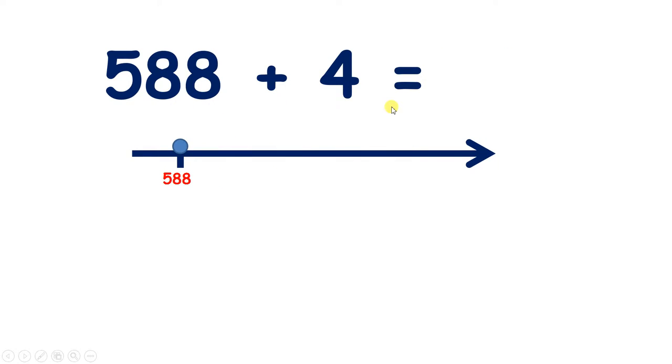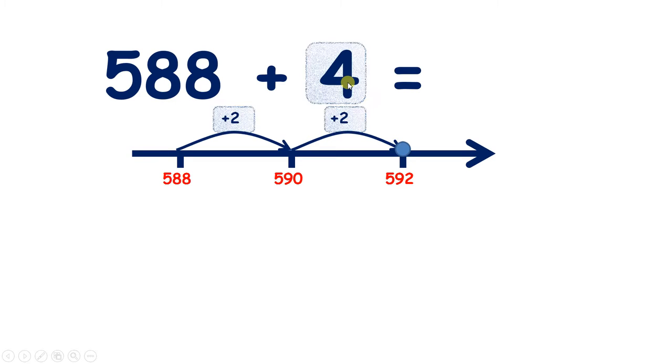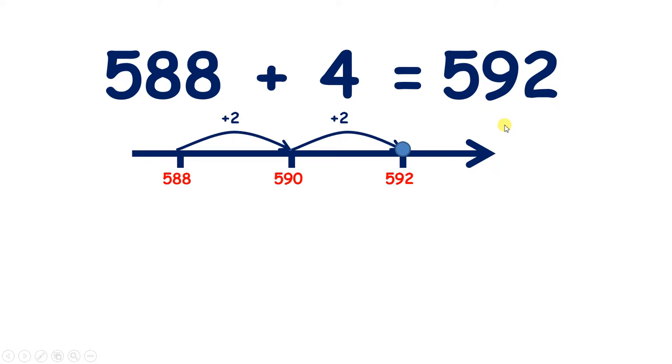Or if we do the same question using bridging, we know that if we're on 588, 2 more will take us to 590, and then another 2 takes us to 592. And if we've added 2 and then added another 2, we've added 4 altogether. So 588 add 4 equals 592.